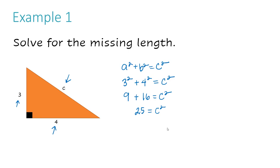Right now C squared is already on the right side, so I just need to get C by itself. What's there with the C is the exponent of 2. To undo that, I need to use a radical. If you haven't watched my simplifying radical expressions video, please go watch that. Whenever you need to undo addition you use subtraction — right now we have an exponent, so to undo it we use a radical, which is the inverse operation of an exponent.